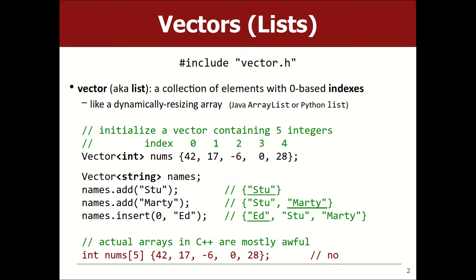A vector is a collection of elements with indexes starting at 0. Some languages distinguish between a fixed-size array and a dynamically resizing list — we're focusing on the one that resizes dynamically. To use vectors in C++, you include vector.h with quotation marks, meaning it's a Stanford local library. You can initialize a vector by specifying the element type in angle brackets and providing initial values in curly braces, or you can make an empty vector and add elements using .add.